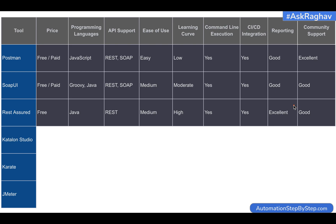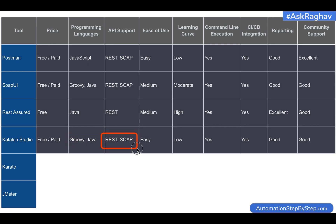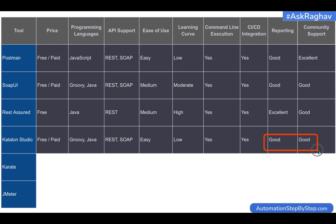Coming to Katalon Studio — Katalon Studio has free and paid versions. It supports Groovy and Java programming languages, and it supports both REST and SOAP APIs. Ease of use is good — it has a good UI and you can very quickly create your API tests. The learning curve is low. It has command line execution, CI/CD integration, good reporting options, and good community support. This is also a good option for API testing.